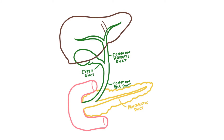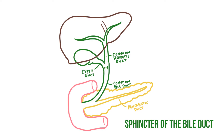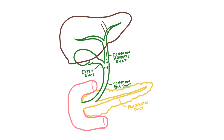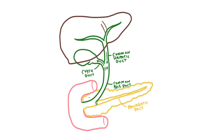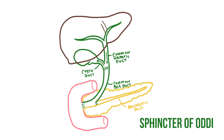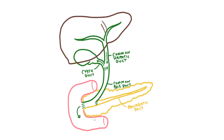Along this biliary tree we'll have a number of sphincters that control the flow of the various liquids. For example, the sphincter of the bile duct allows bile from the liver to collect and head up into the gallbladder via the cystic duct. The pancreatic sphincter controls the release of pancreatic juices. And here in the ampulla, the sphincter of Oddi ultimately controls the release of bile and digestive juices into the duodenum.